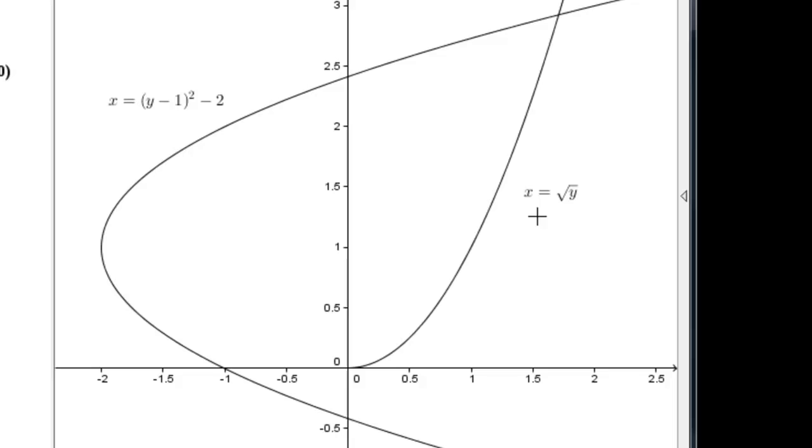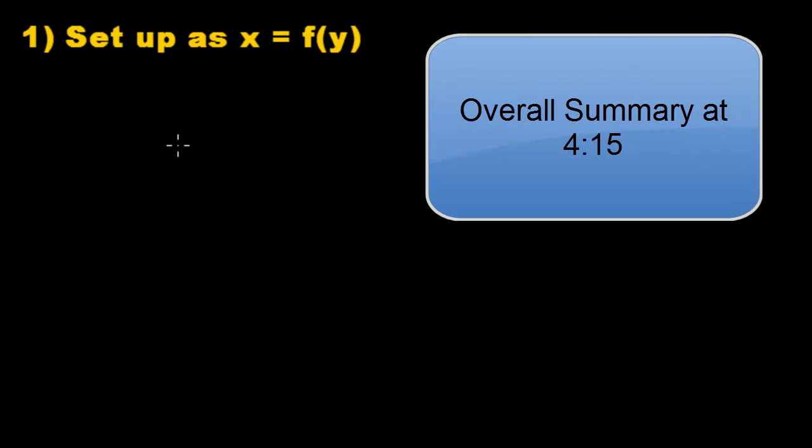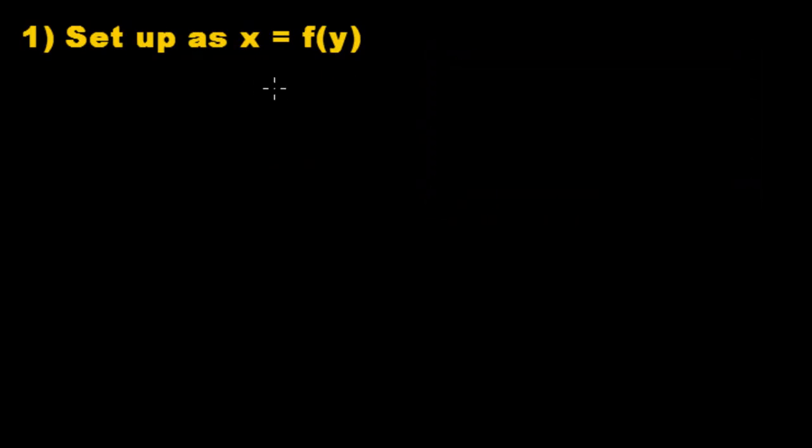So let me take you through the steps. Step 1, we're going to set them up as x equals f of y. Now I have them already set up like that. It was x equals y minus 1 squared minus 2. And the other one was x equals the square root of y.